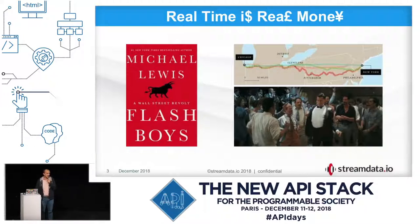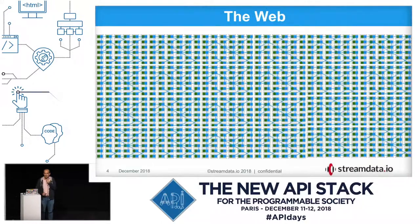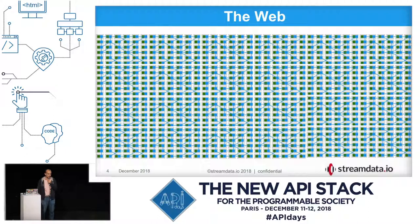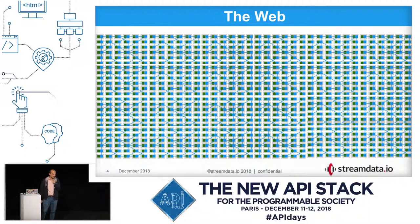The way I see the web now is pretty much the same as a city — the city of Paris. For those who know it, this is a service mesh. The web to me is a population of services that interconnect and exchange events. This is the subject of this presentation.